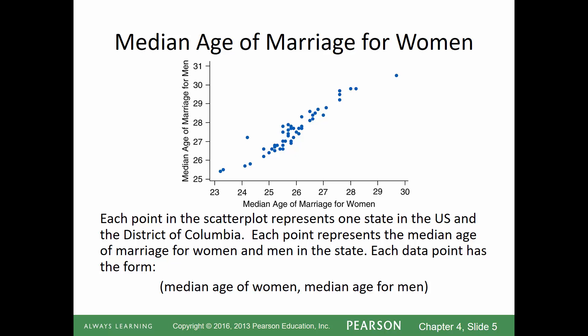Here's an example of a scatter plot. The title of the graph is the median age of marriage for women. Along the bottom we have the median age of marriage for women and along the side the median age of marriage for men. Each point in the scatter plot represents one state in the US or the District of Columbia — so Ohio, Indiana, Florida each have their own dot.